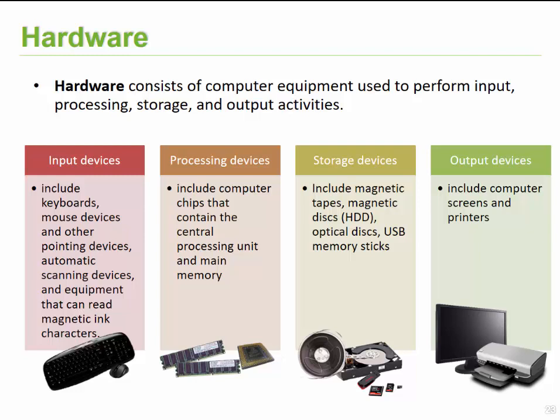For processing, we have our memory and our CPU, which will take the inputs, give them meaning, turn them into information, and then manipulate and store it. When we talk about storing information on the hardware side, that includes magnetic tapes, magnetic disks, hard disks, memory sticks, and SD cards on your cell phone.